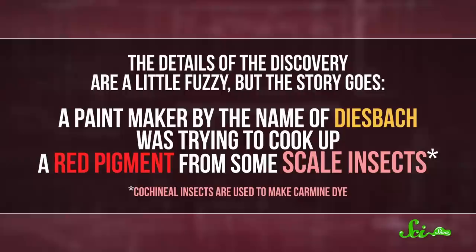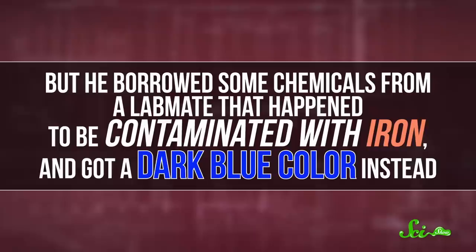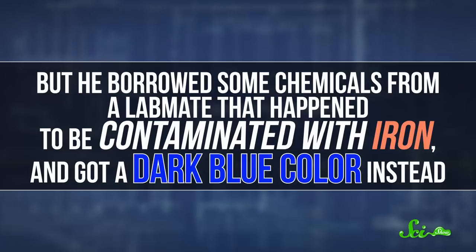Now, the details of the discovery are a little fuzzy, but the story goes a paint maker by the name of Diesbach was trying to cook up a red pigment from some scale insects. But he borrowed some chemicals from a lab mate that happened to be contaminated with iron, and got a dark blue color instead.